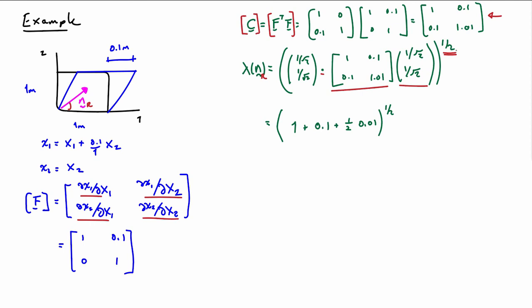So if we do the multiplication out, we'll end up with 1 plus 0.1 plus 1.5 times 0.1 squared, square root. And if we work that out, it should come out to 1.05, assuming I didn't make any mistakes there. And if we want to know what the strain is, the strain, remember, is just lambda minus 1, so we end up with 0.05, which is 5%. So it's a 5% strain along the diagonal for this 10 centimeter motion of this 1 meter by 1 meter block of material.